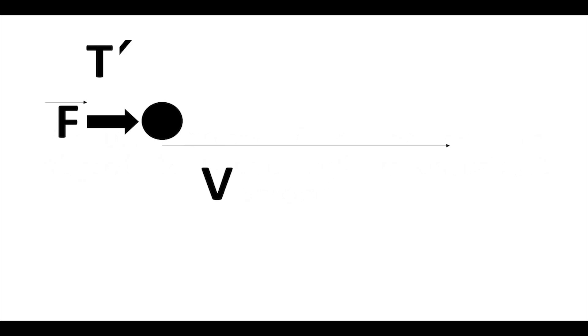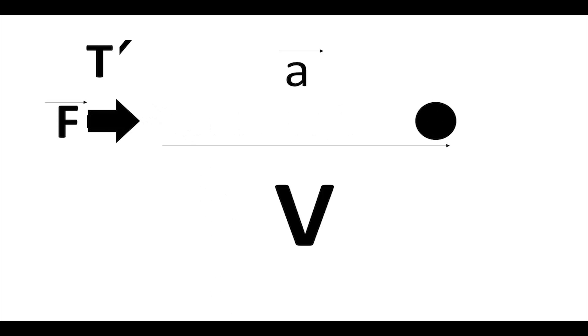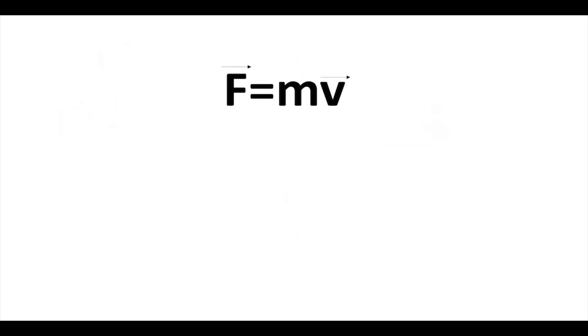But at T prime we act the same force on our object with its initial force that was moving at V. So now our object is moving at V prime. V is bigger and is not constant. What is constant is acceleration. A constant force is not involving a constant velocity, but a constant acceleration.